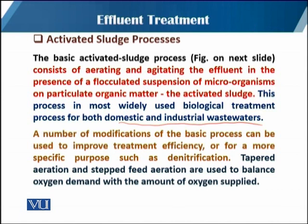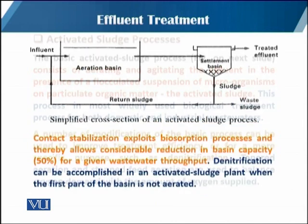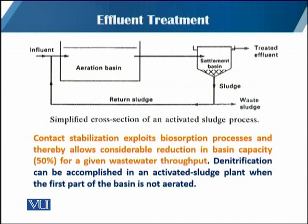A number of modifications of this basic process can be used to improve treatment efficiency for more specific purposes such as denitrification. Tapered aeration and stepped feed aeration are used to balance the oxygen demand with the amount of oxygen supplied. You can see a simplified cross-section of the activated sludge process: there is an aeration basin, the fluid comes in from one side, goes to the settlement basin, treated fluid is collected, and sludge is returned back — with excess as waste sludge.